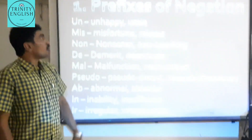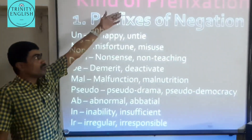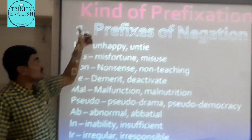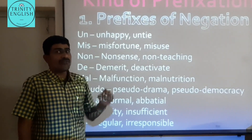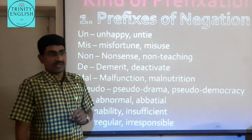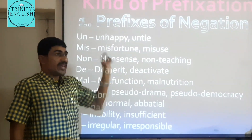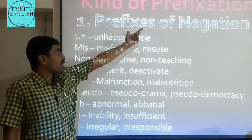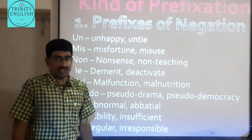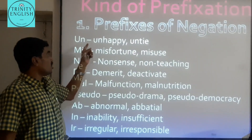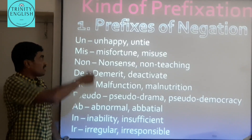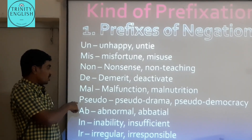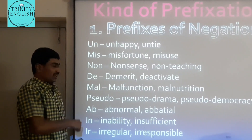There are different kinds of prefixes. The first type is prefixes of negation. When we add negative elements to base words, those are called prefixes of negation. Examples include: un-, mis-, non-, de-, mal-, pseudo-, ab-, in-, and ill-.